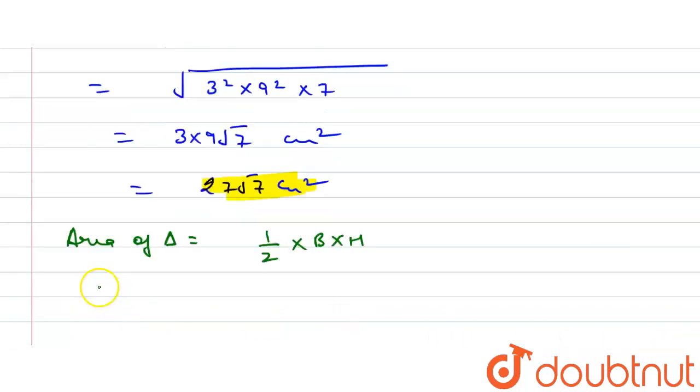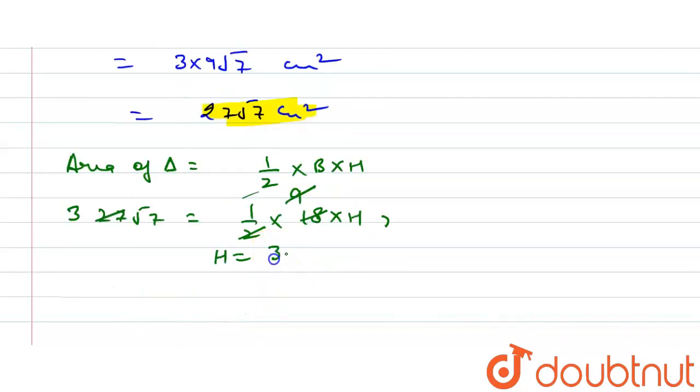Area of triangle is 27 root 7 equals 1 by 2, base is 18, and we have to find the height. 2 cancels 18 by 9, and 9 cancels 27 by 3. So our height is equal to 3 root 7.